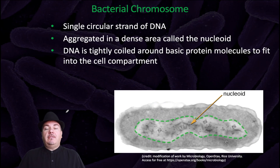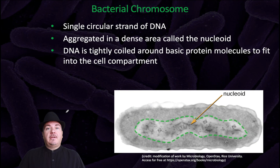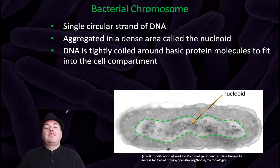Located within the bacterial cell, you'll find the bacterial chromosome, which is a single circular strand of DNA. Note that it's not inside the nucleus like you would find it in a eukaryotic cell, because bacteria don't have any membrane-bound organelles. Instead, it's in a region of the cell called the nucleoid. The DNA is tightly coiled around basic protein molecules to enable it to fit within the cell compartment.